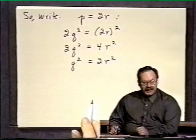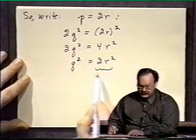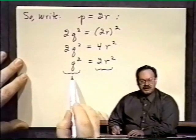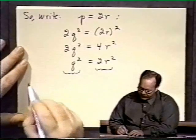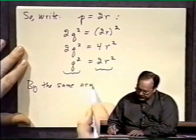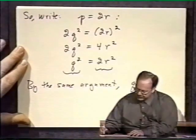Now we're back to the same argument we did before. Since 2 divides the right-hand side, it must therefore divide the left-hand side, which means that q must be even. So by the same argument as before, q is even.